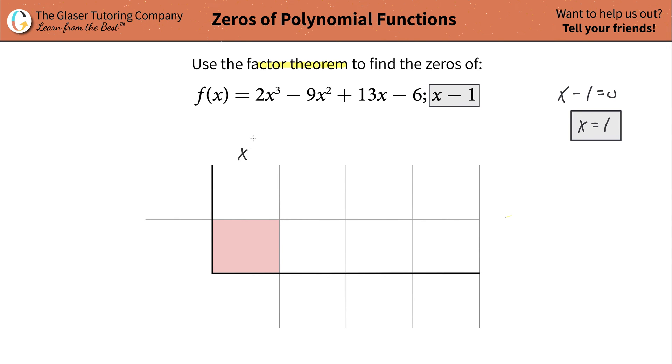So here in goes the coefficient of the x³ term, this will go in the coefficient of the x², this is x, and that's your constant. So the coefficient of the x³ term is a 2. Coefficient of the x² term is going to be a negative 9, x is going to be 13, and the constant is negative 6. Then what you're going to do is you're going to take this x minus 1, set it equal to zero and solve it for x, which we already did over here. So we're actually trying to test this zero.